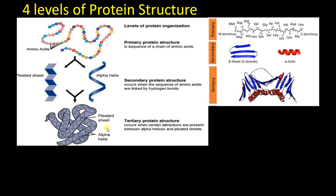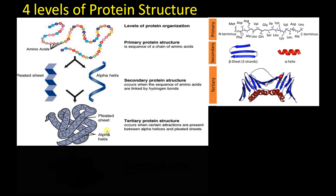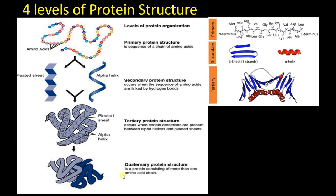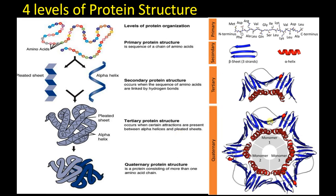Many bonds are involved in tertiary structure beyond peptide and hydrogen bonds. In some proteins made up of more than one polypeptide chain, each chain is called a subunit — as in the case of hemoglobin. These subunits together form the quaternary structure.